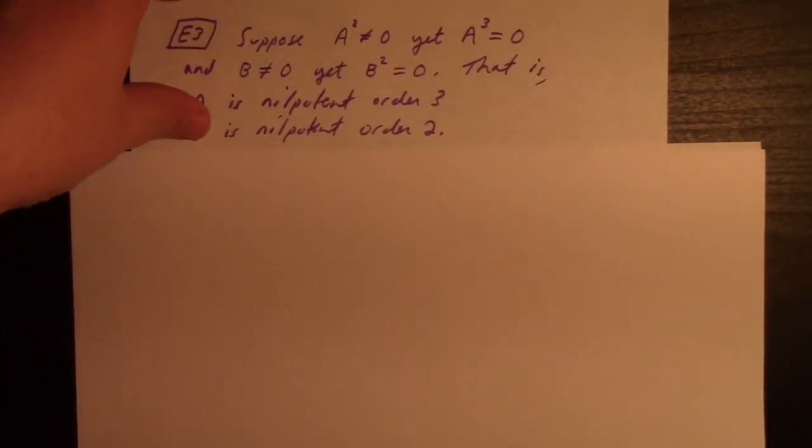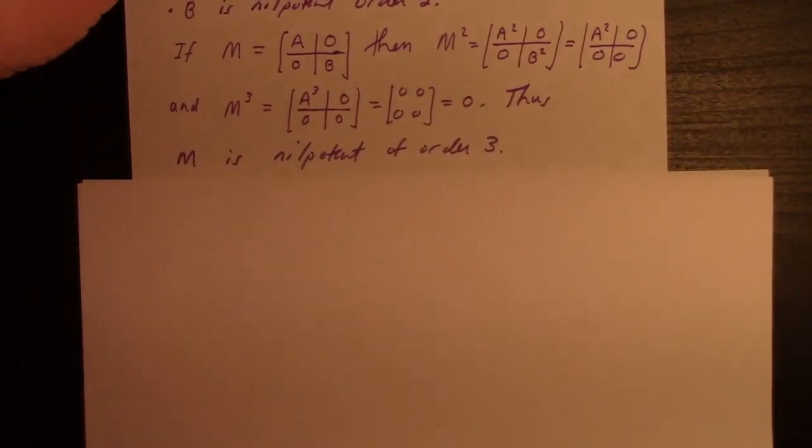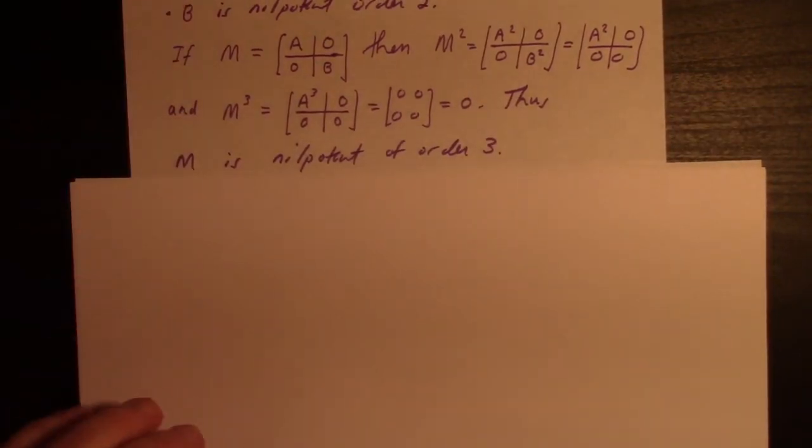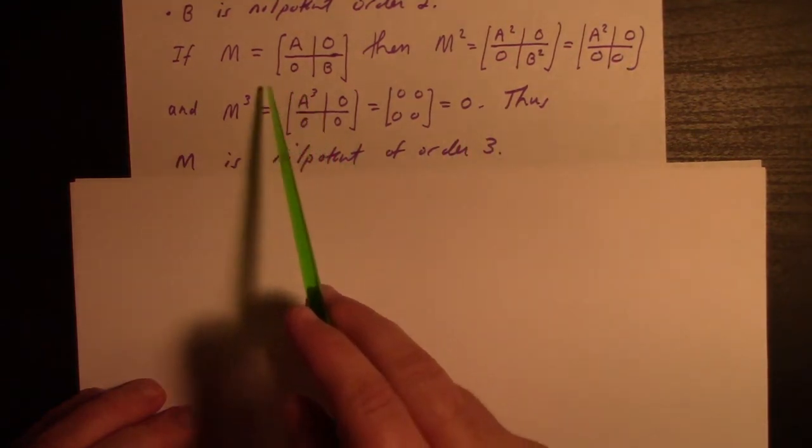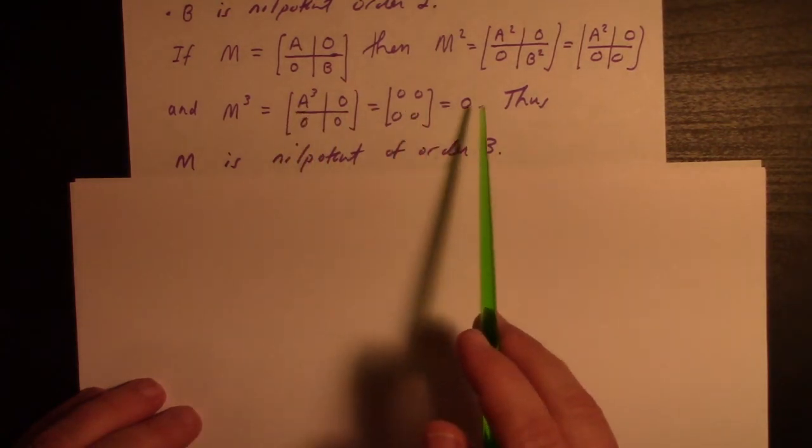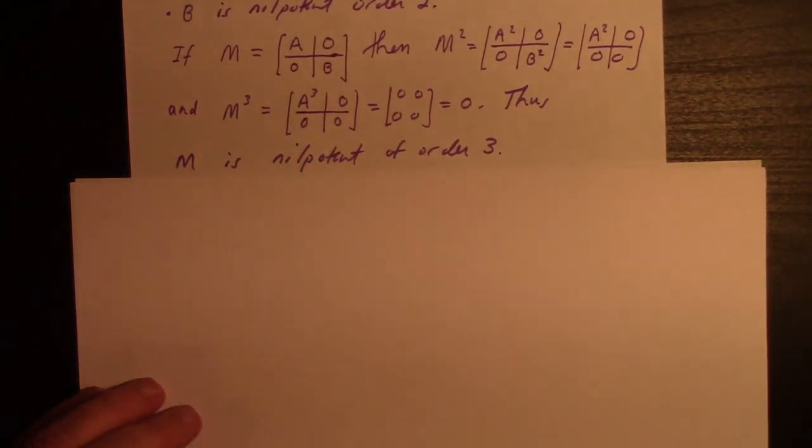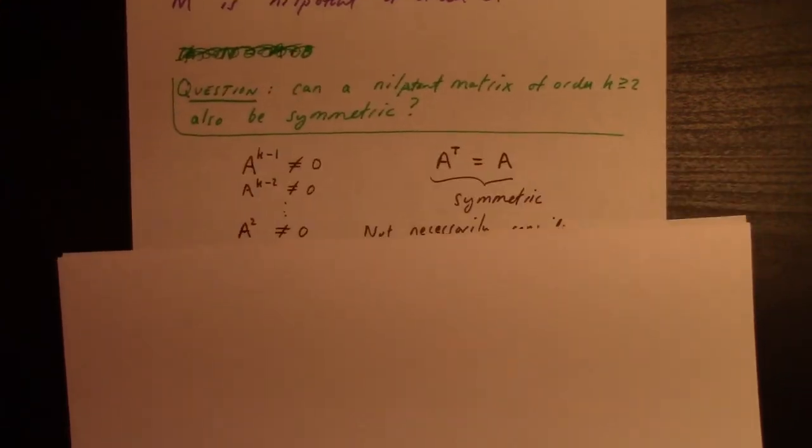If we calculate M squared, we still get something non-zero. But if we calculate M cubed, because we cube the blocks, that gets zero. So M is also nilpotent of order three, even though it's made with something nilpotent of order two and nilpotent of order three. The three wins, so to speak.